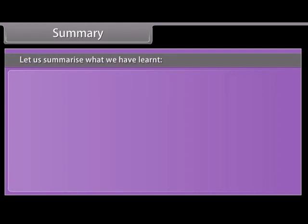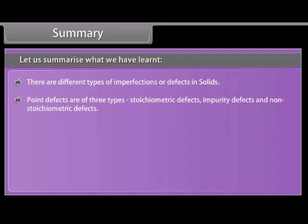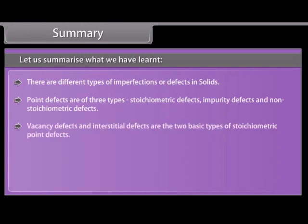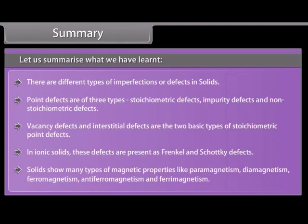Summary: There are different types of imperfections or defects in solids. Point defects are of three types: stoichiometric defects, impurity defects, and non-stoichiometric defects. Vacancy defects and interstitial defects are the two basic types of stoichiometric point defects. In ionic solids, these defects are present as Frenkel and Schottky defects. Solids show many types of magnetic properties: paramagnetism, diamagnetism, ferromagnetism, antiferromagnetism, and ferrimagnetism.